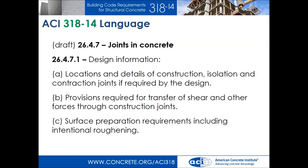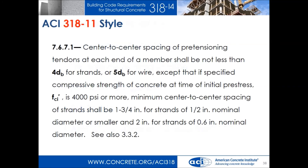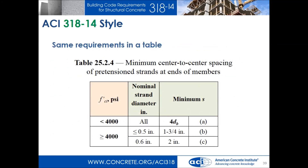We've talked about reorganization and ease of use — there are also style improvements. If you read provision 7.6.1 from 318-11, all it's trying to give is a limit on spacing of pre-stressing strand, with conditions that vary depending on concrete strength and wire size. But you have to read it several times and maybe sketch something out just to understand what it's communicating. So we've been bringing in tables to present information more clearly. Now you can clearly see the minimum spacing requirement for each condition just by reading left to right. The guesswork is gone; you don't need to make tables on the side.